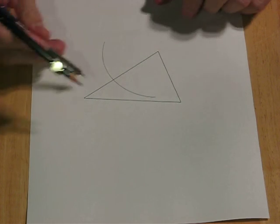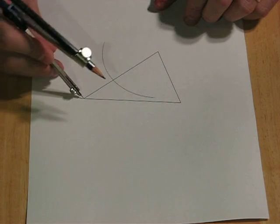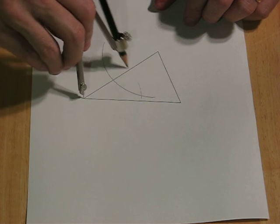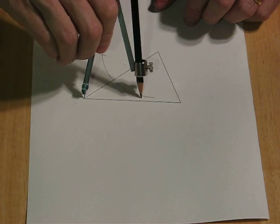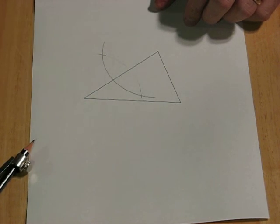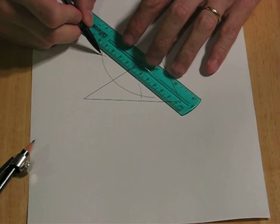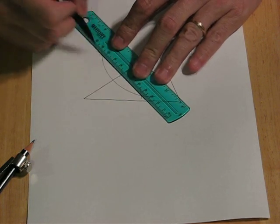Then without changing the compass radius, you go to the other end of that same segment and you make an arc. You don't have to make the full arc. What you need is this intersection point here and here. Those two points define the perpendicular bisector of that segment.